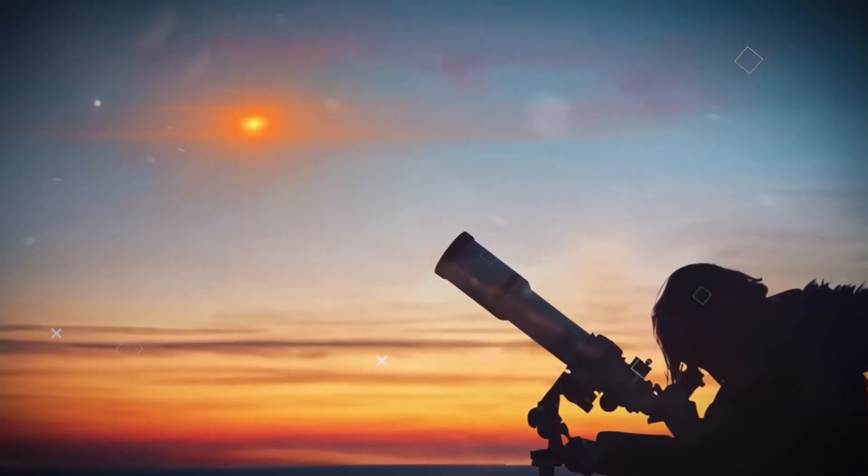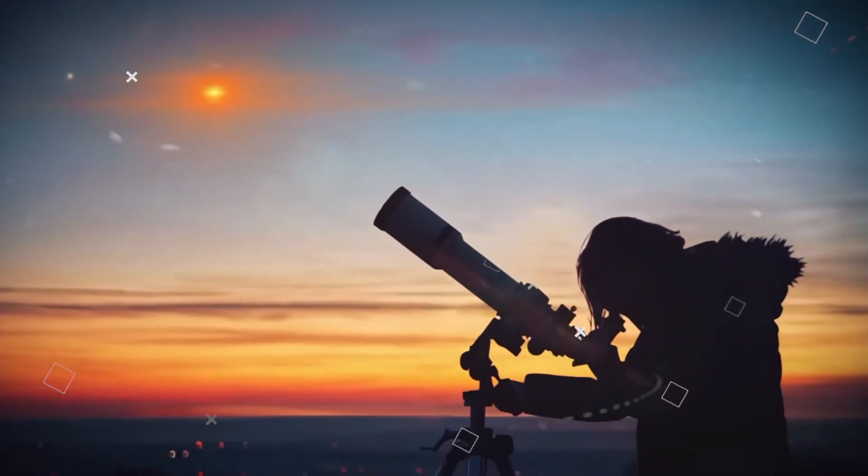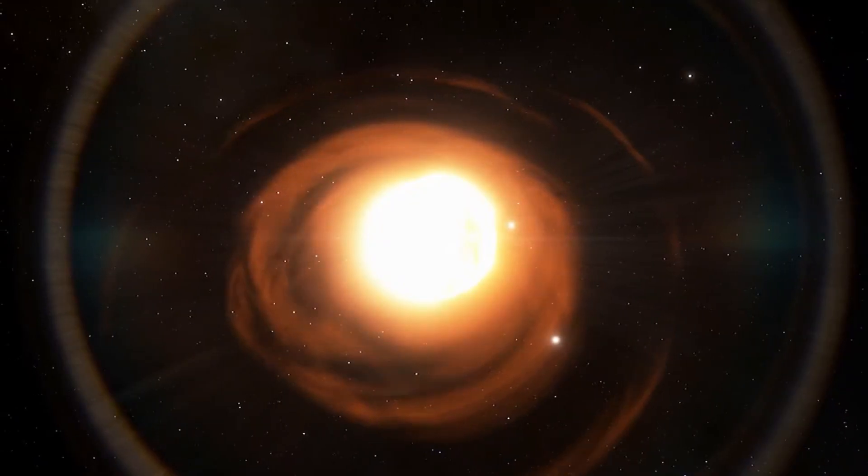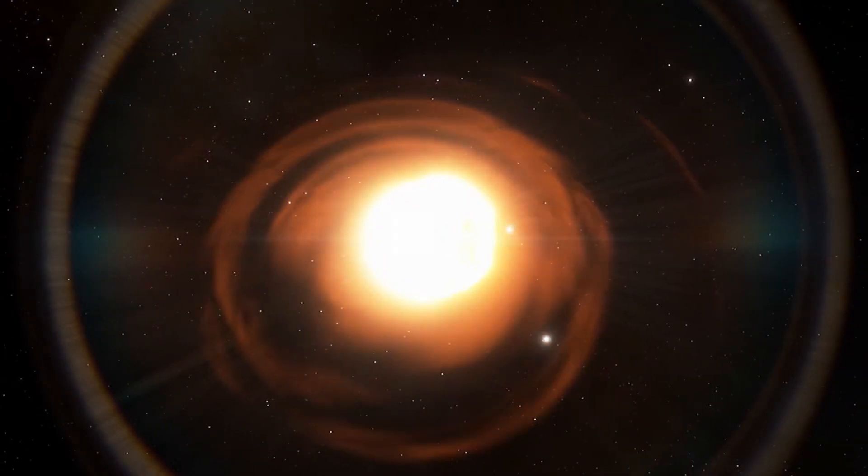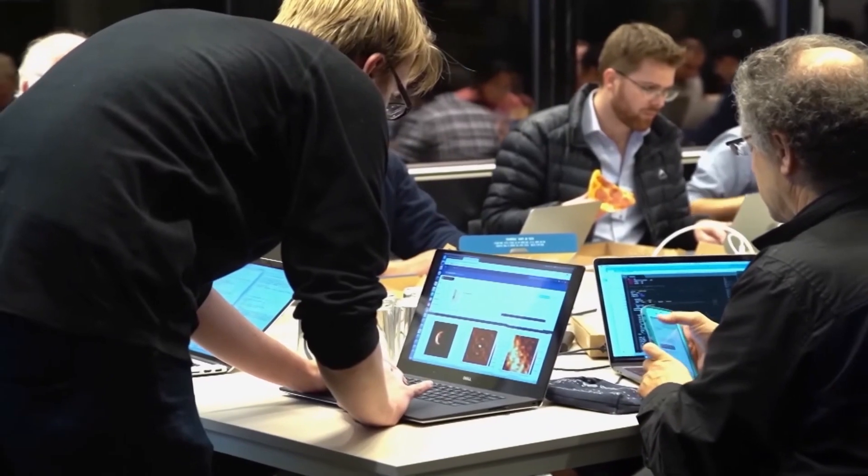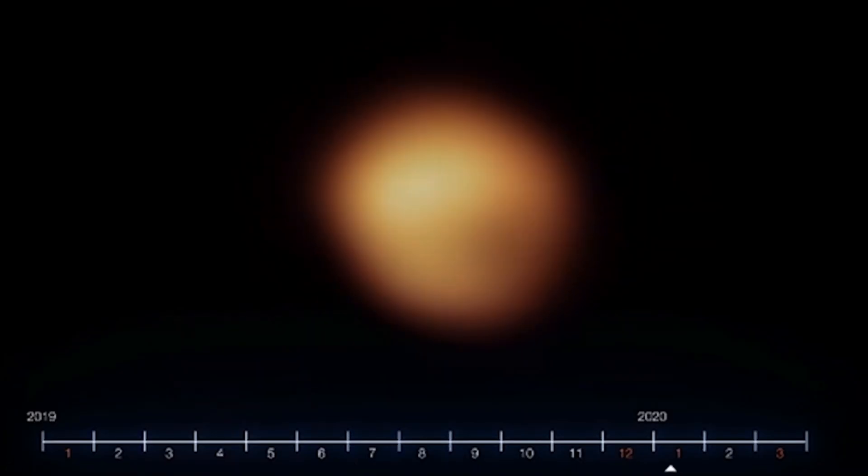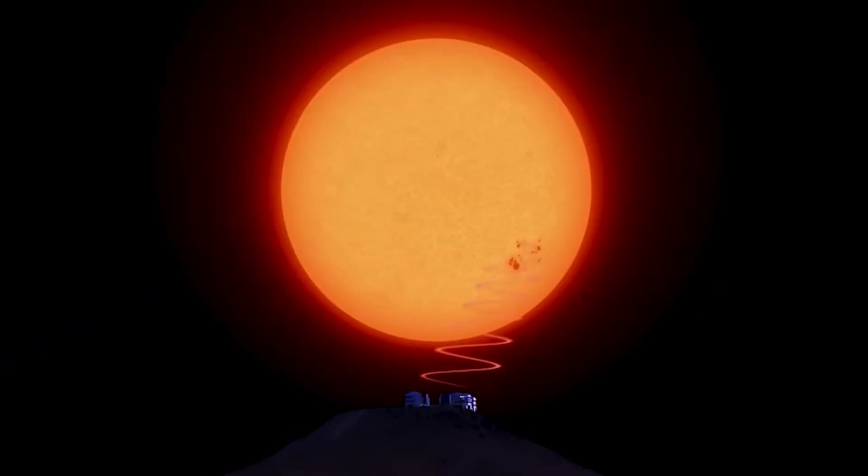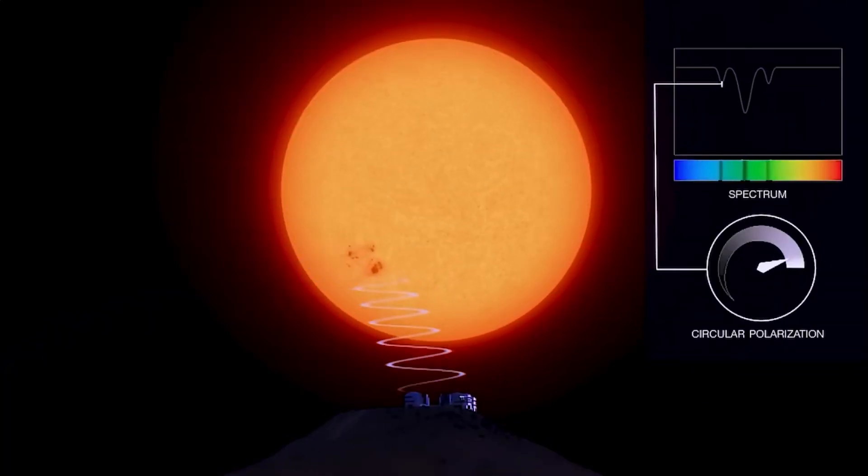Betelgeuse likes to play with its brightness. It's what we call a variable star, which means its brightness goes up and down, sometimes in a big way. But what's really interesting is that this star is getting brighter these days, and scientists are actually scared of it. You see, in the past, Betelgeuse had a regular pattern of getting brighter and dimmer, taking about 400 days to complete the cycle.